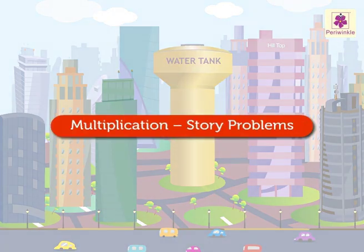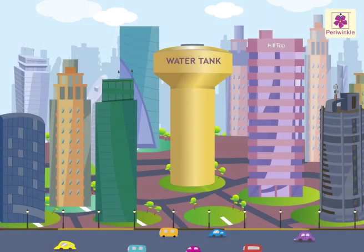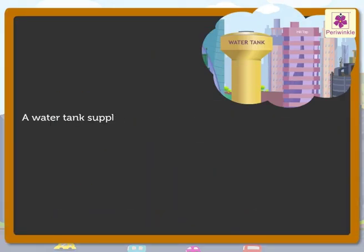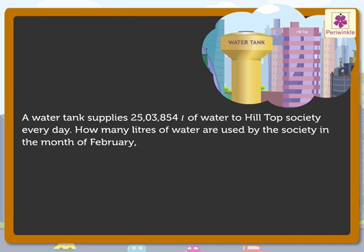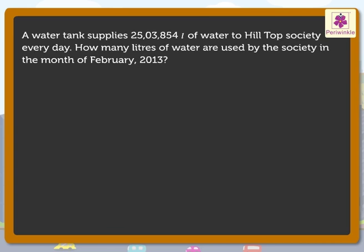Today let us solve some multiplication story problems and also revise how to write the statements. A water tank supplies 25 lakh 3854 liters of water to Hilltop Society every day. How many liters of water are used by the society in the month of February 2013? To understand the problem well and to know how to write the statements, ask these questions: what is 25 lakh 3854 and what is 28?